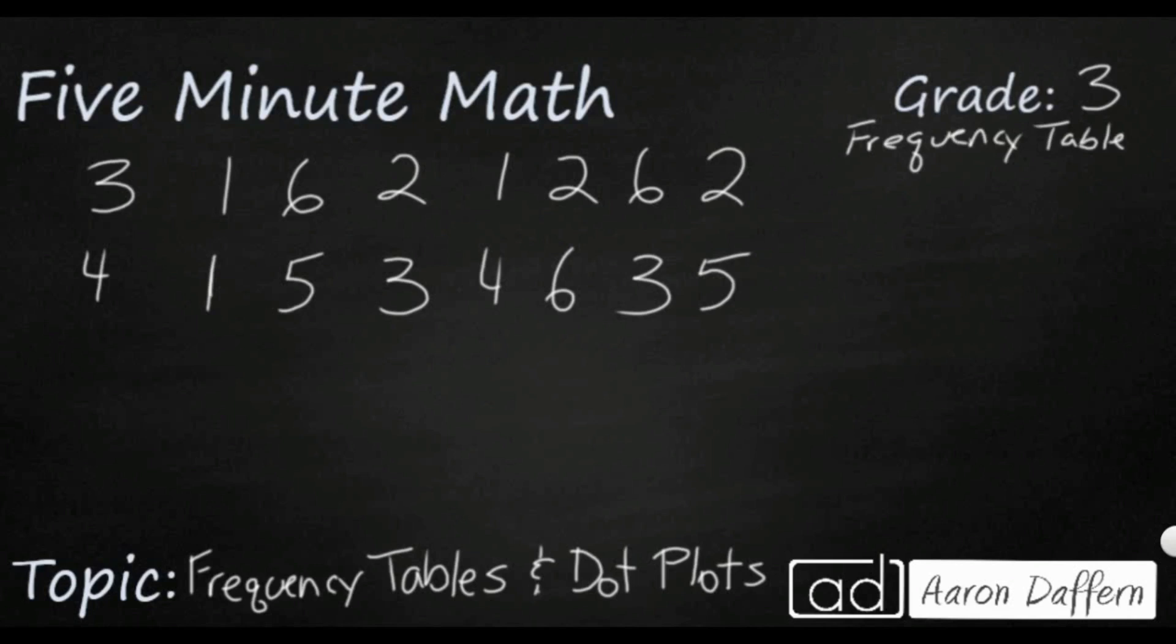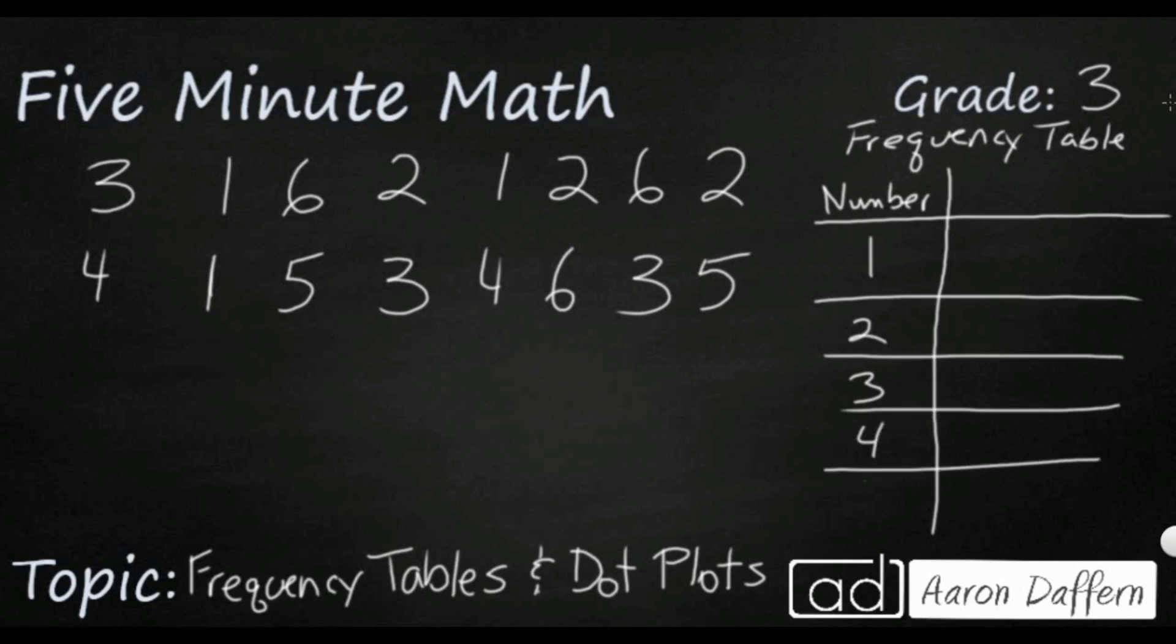So what we're going to do is we're just going to first write the number. And we only have six options here, right? We've got our one, two, three, four, five, and six. Those are the options that were on the die when we were rolling it.